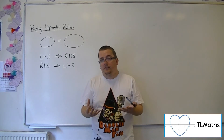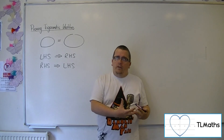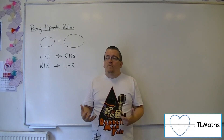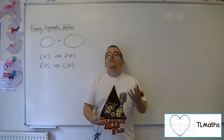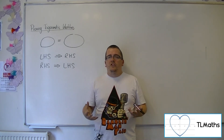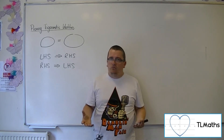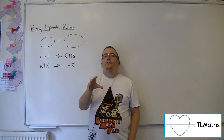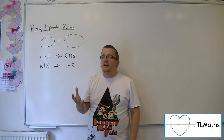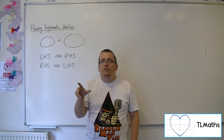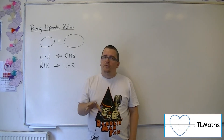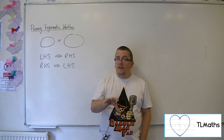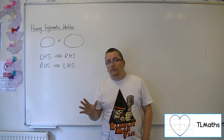You cannot assume that they are equal at the start. There is that kind of argument which causes a problem, because essentially, because it is a trigonometric identity, we know that the left-hand side is going to be equal to the right-hand side. The left-hand side will always be equal to the right-hand side when proving a trigonometric identity. And so because you know that, it feels like it's a good idea that you can just move things across the equal sign. But you can't do it that way. Mathematically, it's wrong to do that, even though we know that the left-hand side is equal to the right-hand side. In order to prove it and show it correctly, you must start with one side and get to the other side.